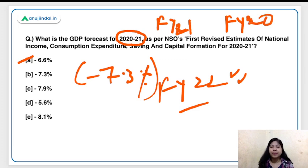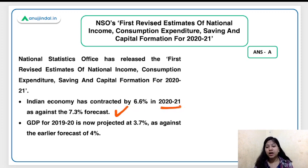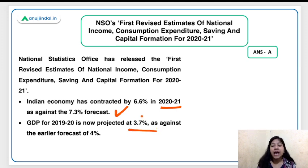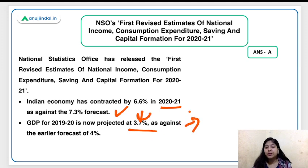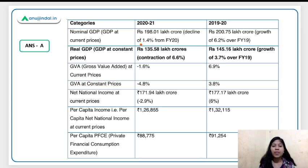To summarize: the revised GDP contraction for FY21 is 6.6 percent, and the GDP growth rate for FY20 has been revised to 3.7 percent. Earlier, NSO's forecast for FY20 was 4 percent, which has now been downgraded to 3.7 percent.